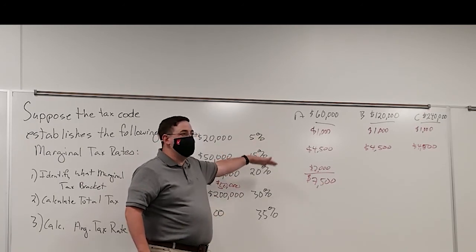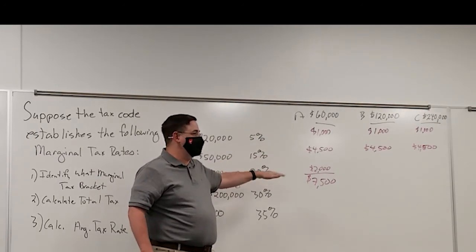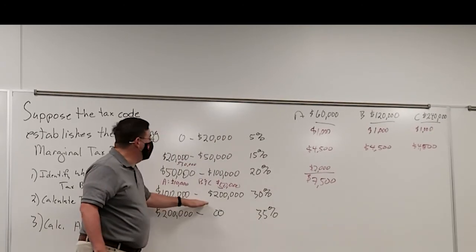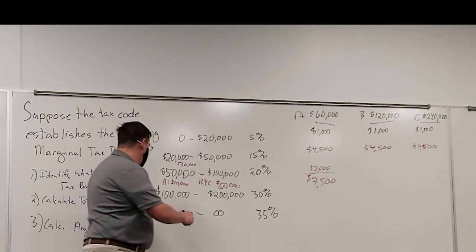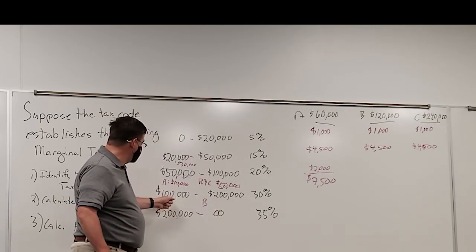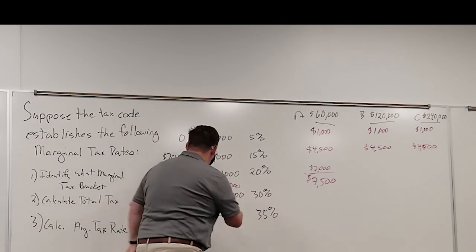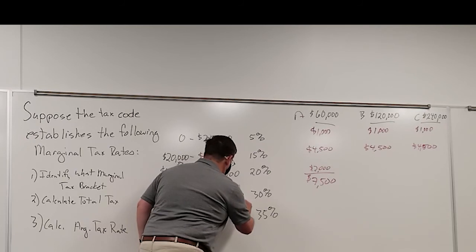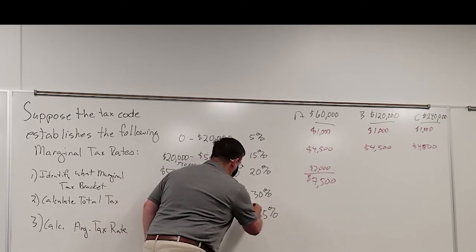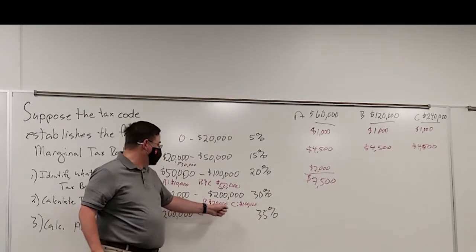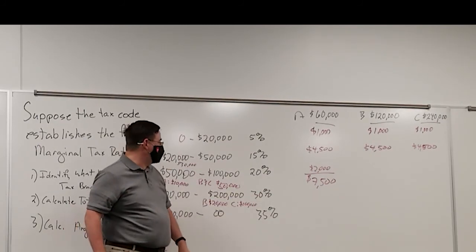This is a little bit confusing to figure out at first, how this all works. Now, family B is earning $120,000. So they're going to pay $20,000 of tax at this rate. And family C is going to pay $100,000 at this rate. So $20,000 at 30% is $6,000.